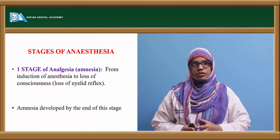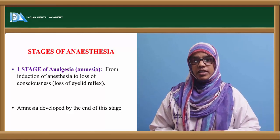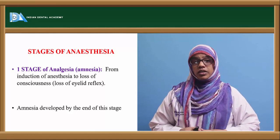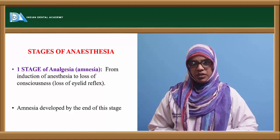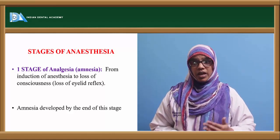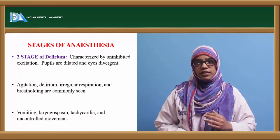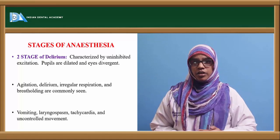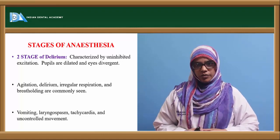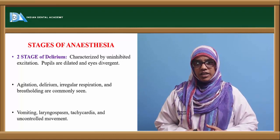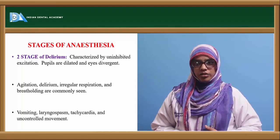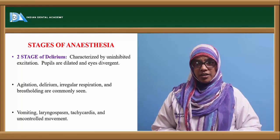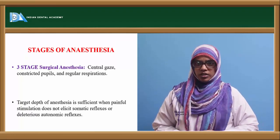The first stage of anesthesia is analgesia — from the induction of anesthesia to the loss of consciousness, wherein there is loss of eyelid reflex, and amnesia eventually develops. The second stage is delirium, characterized by unhindered excitation: pupils are dilated, eyes are divergent, and there is agitation, delirium, irregular respiration, and breath holding. Vomiting, laryngospasm, bradycardia, and uncontrolled movement are also commonly seen in this stage.